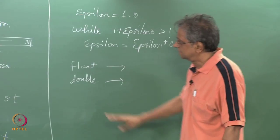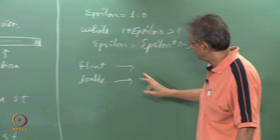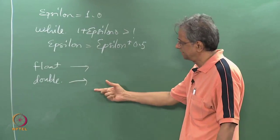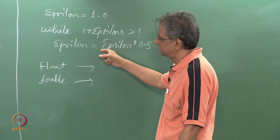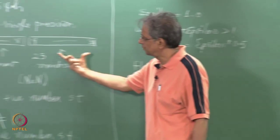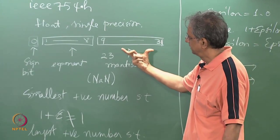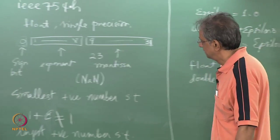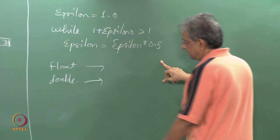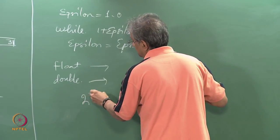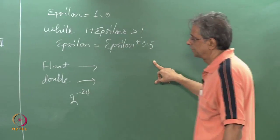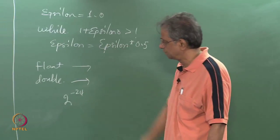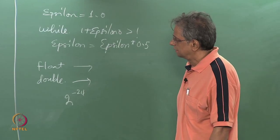This is for single precision. You should relate the epsilon result to the size of the mantissa — what we are measuring is what we can resolve with respect to 1, which is determined by the mantissa size. Please check the epsilon you get and compare it to 2 raised to the power minus 24. I explained yesterday why it is 24 — see what relationship you find.